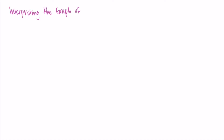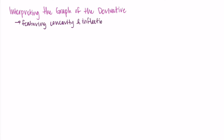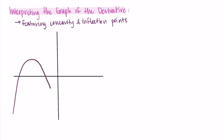Welcome back. Now that we know how to talk about the second derivative — specifically concavity and inflection points — I want to return to an old idea: interpreting the graph of the derivative. This time we're going to focus on concavity and inflection points and talk about how we can get that information from the graph of the derivative. At the end of this video, I'll also show you a graph of the second derivative and talk through that briefly.